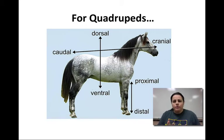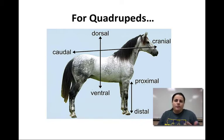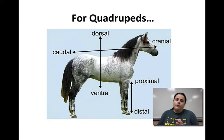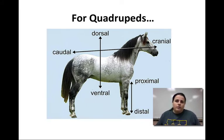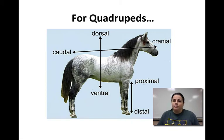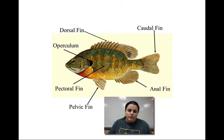Some of those terms — anterior, posterior, superior, inferior — are sometimes called dorsal, ventral, cranial, and caudal, but that's mainly for non-human animals such as this quadruped, a horse. Cranial means towards the head end, caudal means towards the tail end, dorsal means towards the back, and ventral means towards the belly side. If you plan on going into zoology or veterinary science, you'd probably use those terms more. The dorsal fin of a fish and the caudal fin would be the tail fin.